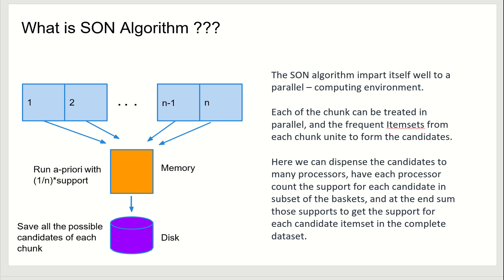Today we are going to discuss the SON algorithm, commonly called the Savasir-Omensky-Navati algorithm. The SON algorithm is used to find all the frequent item sets. To find frequent item sets, we repeatedly read small subsets of the baskets into main memory and perform the simple algorithm on each subset. An item set becomes a candidate if it is found to be frequent in one or more subsets of the baskets.